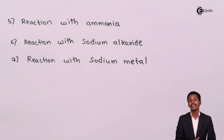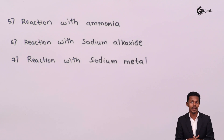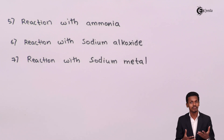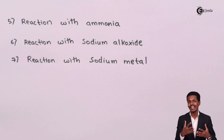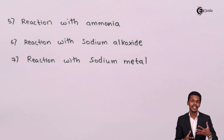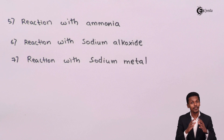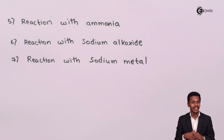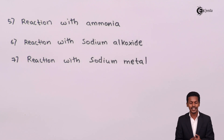Alkyl halides can also react with sodium metal to form a larger hydrocarbon. For example, if methyl chloride is treated with sodium metal, another molecule of methyl chloride reacts with the sodium to produce ethane. The number of carbon atoms increases in the molecule. This reaction is known as Wurtz reaction, and will be covered in detail in the next lecture.